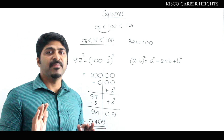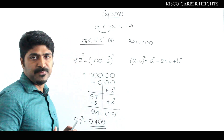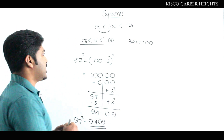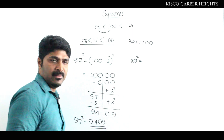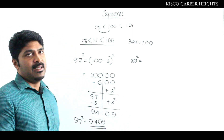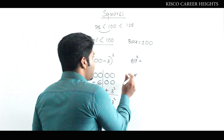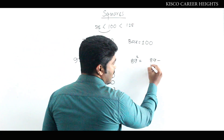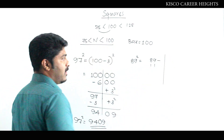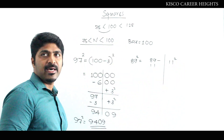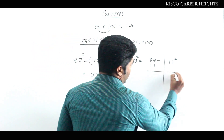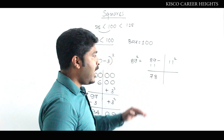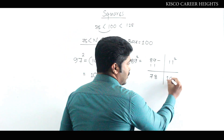Let's consider one more example in this range. If you need to find out 89 squared, the complementary is 11, since 89 is 11 less than 100. The left side is 89 minus 11, and on the right side is the square of the complementary, which equals 11 squared, giving 78 on the left and 121 on the right.